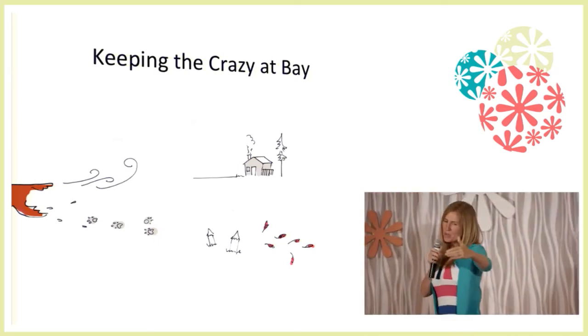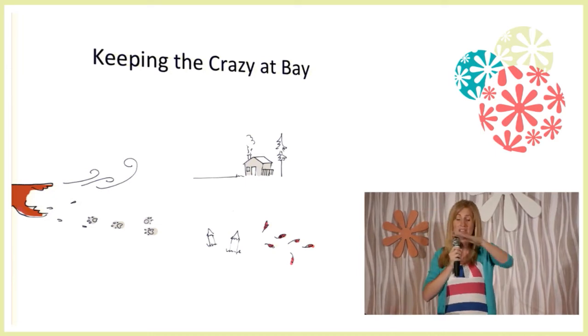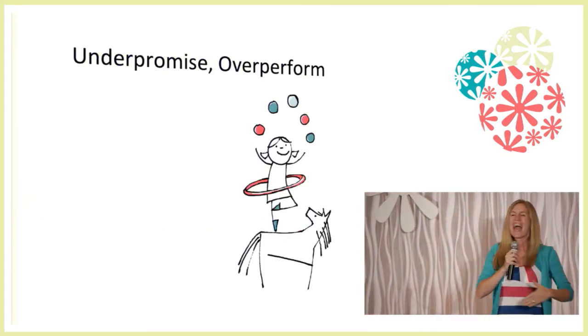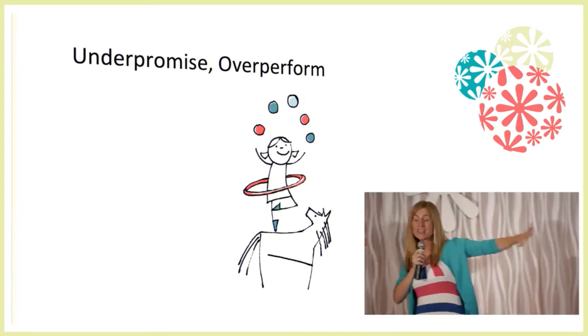So you need to keep crazy at bay. Set a perimeter. Crazy might still chew down a few of your favorite trees. It might get your chickens in the night. It might hurt a little. But you can protect your little home and keep crazy at bay. And sometimes crazy is yourself. It's your own crazy energy that you need to send out to the field.